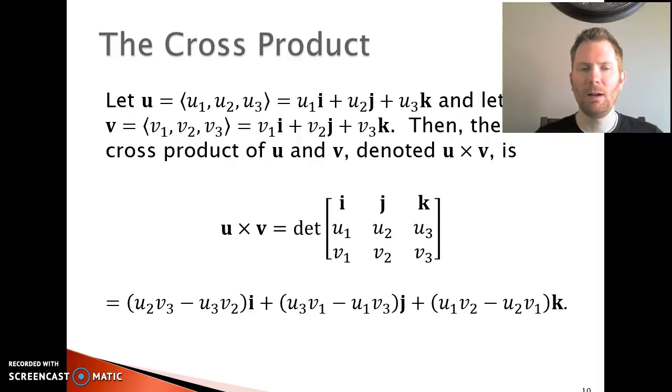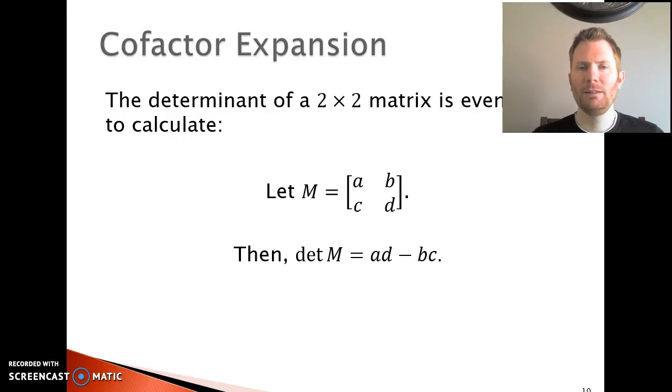I started off with a 3 by 3 matrix, but let's consider a 2 by 2 matrix and how you find the determinant there. In the 2 by 2 matrix ABCD, the determinant of it is simply a times d minus b times c. So multiply both diagonals together and then subtract.